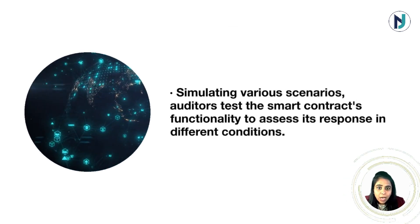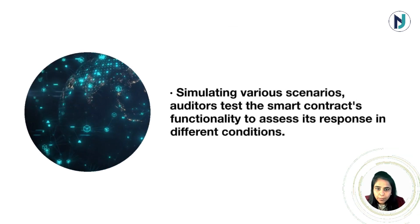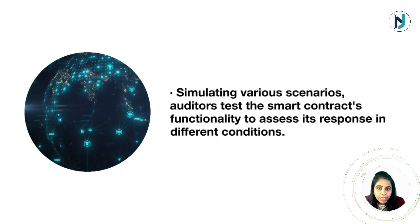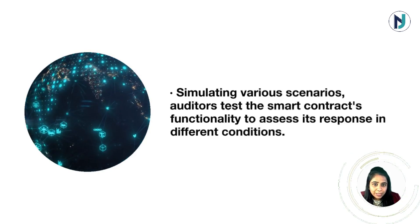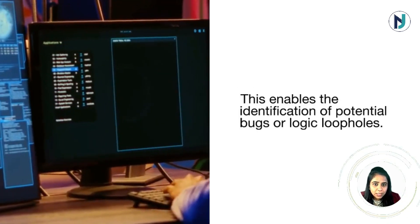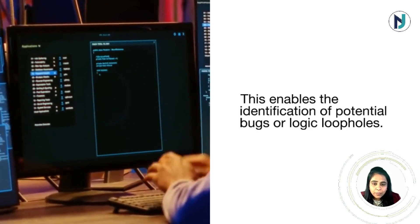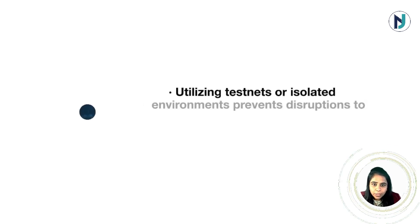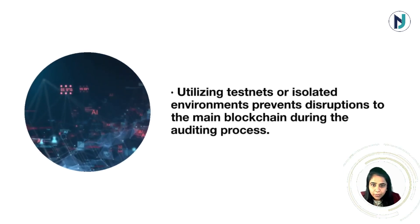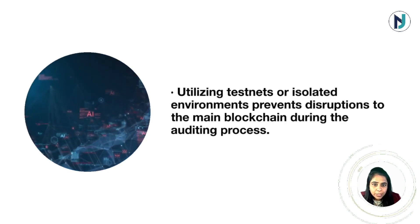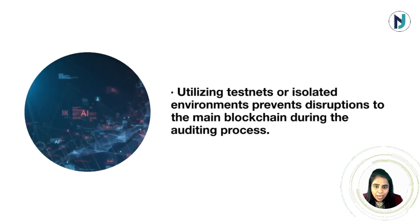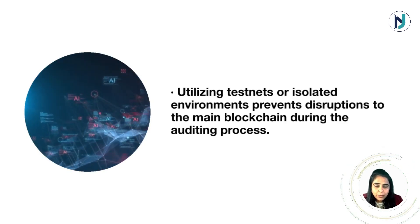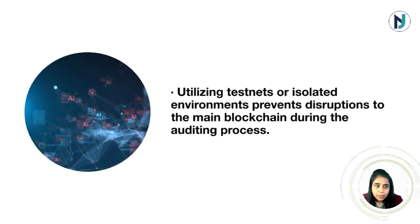Another strategy is regression testing protocol. By simulating various scenarios, auditors test the smart contract's functionality to assess its response under different conditions. This enables the identification of potential bugs or logic loopholes, utilizing test nets or isolated environments to prevent disruption to the main blockchain during the auditing process.